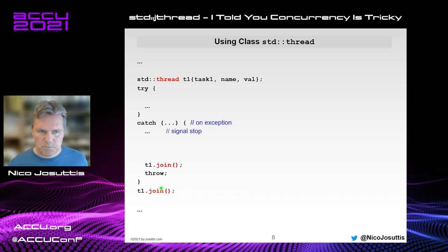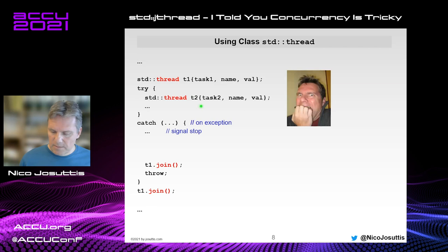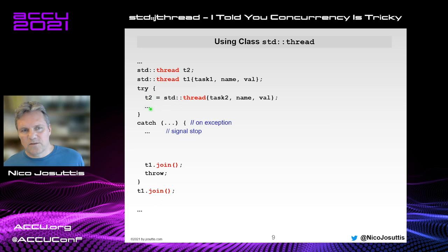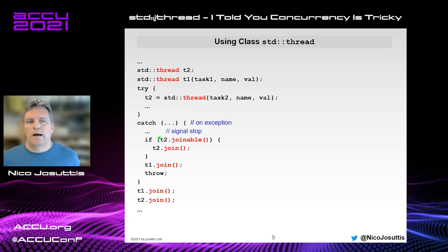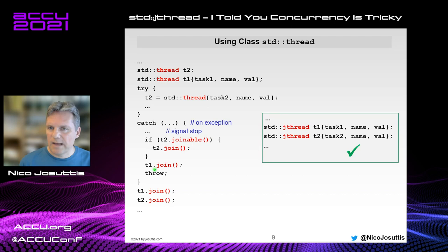Assume you have a thread, you add a try-catch between starting it and joining, and then start another thread — that might throw an exception too. You have to catch that and still join both threads. You end up needing to declare `t2`, move-assign a temporary thread inside the try-catch, check `t2.joinable()` in the catch clause before joining. With `jthread`, you just declare two `jthread`s and that's it.